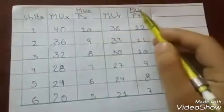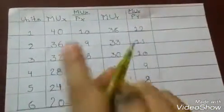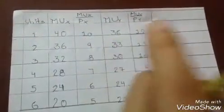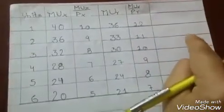Now we will see that in this table, MU X upon price PX and MU Y upon price PY is equal to MU M.